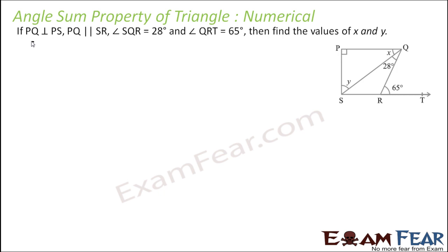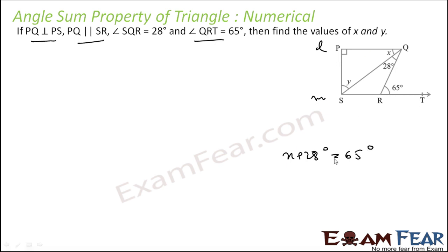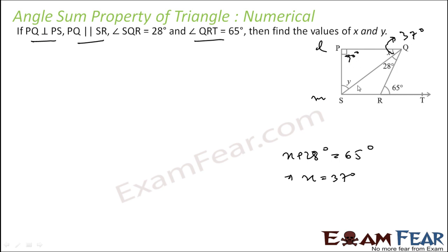PQ is perpendicular to PS, PQ is parallel to SR, angle SQR is 28 degrees, and angle QRT is 65 degrees. We have to find x and y. Since PQ is parallel to SR, by alternate angles: x plus 28 equals 65 degrees, so x equals 37 degrees. Once we find x, we can easily find y because in the triangle the angle sum is 180 degrees — with 90 degrees already given and x equals 37, we solve for y.